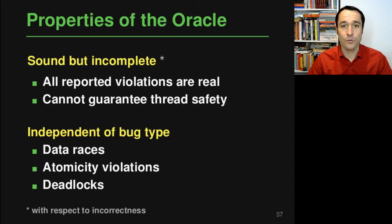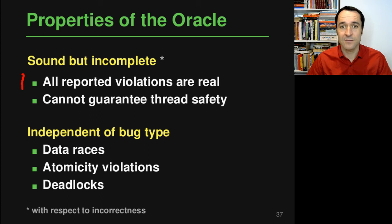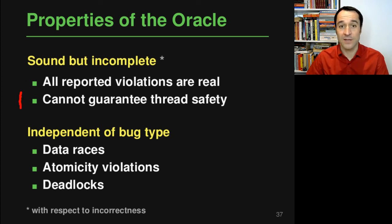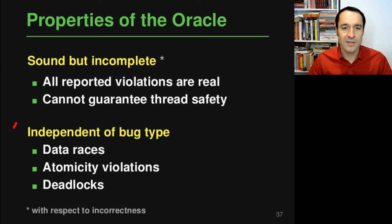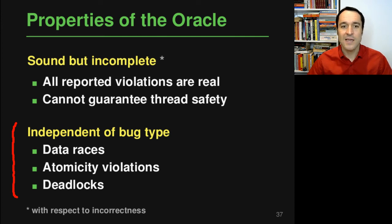This oracle is sound but incomplete, meaning all reported thread safety violations are real — there are no false positives. However, the oracle cannot guarantee that the tested class is indeed thread-safe, because it may not see more subtle misbehavior that does not result in an exception or a deadlock. What is nice about this oracle is that it's independent of the bug type. In contrast to the eraser approach seen in the previous part of this lecture, it's not just looking at data races but can also detect other kinds of concurrency bugs including atomicity violations or deadlocks, as long as they manifest through an exception or a deadlock.